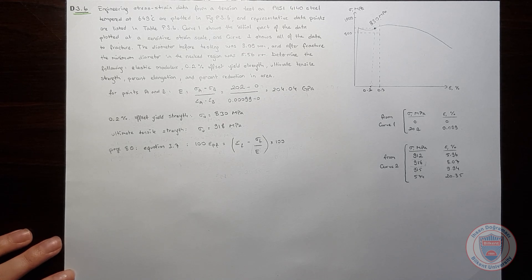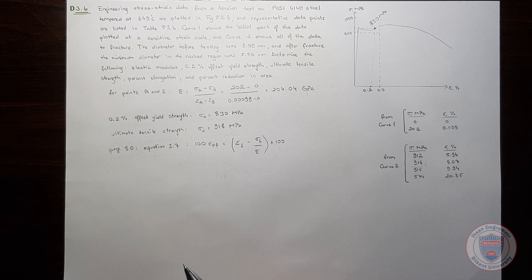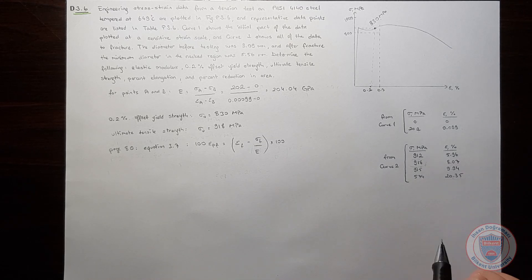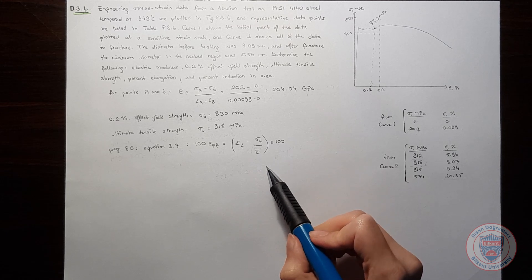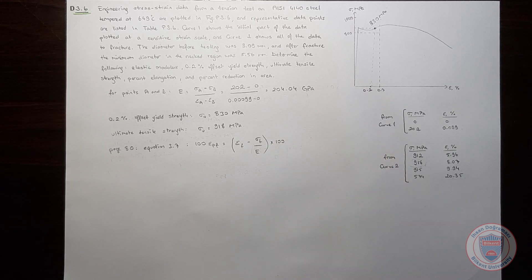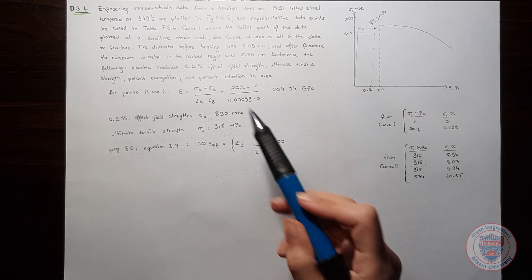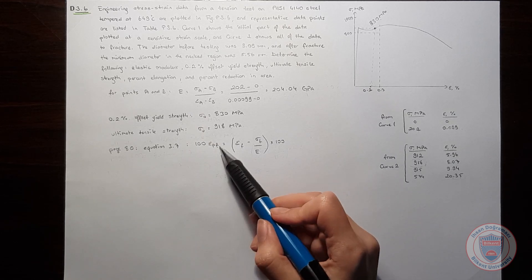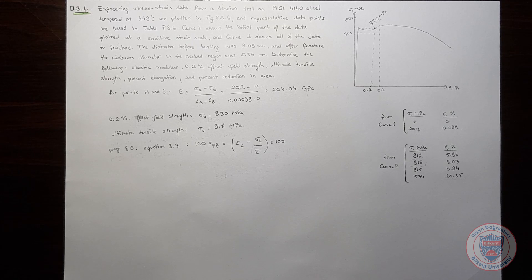So we know the elongation at fracture, which is 20.35 percent, and we know the fractured strength, which is 918 MPa. We also calculated Young's modulus in the previous part, so we can easily calculate the percent elongation after fracture.